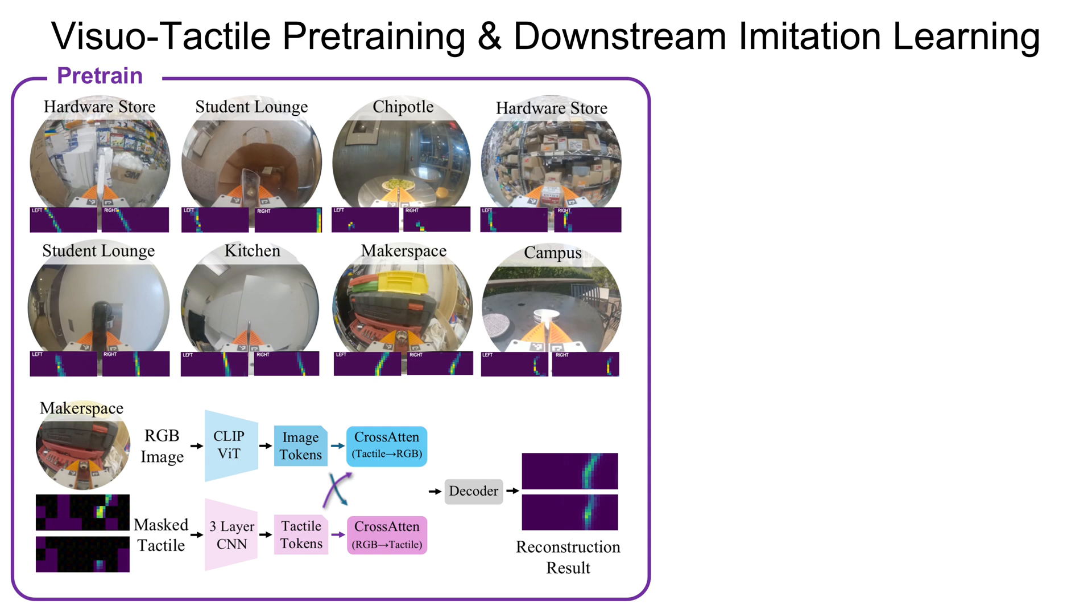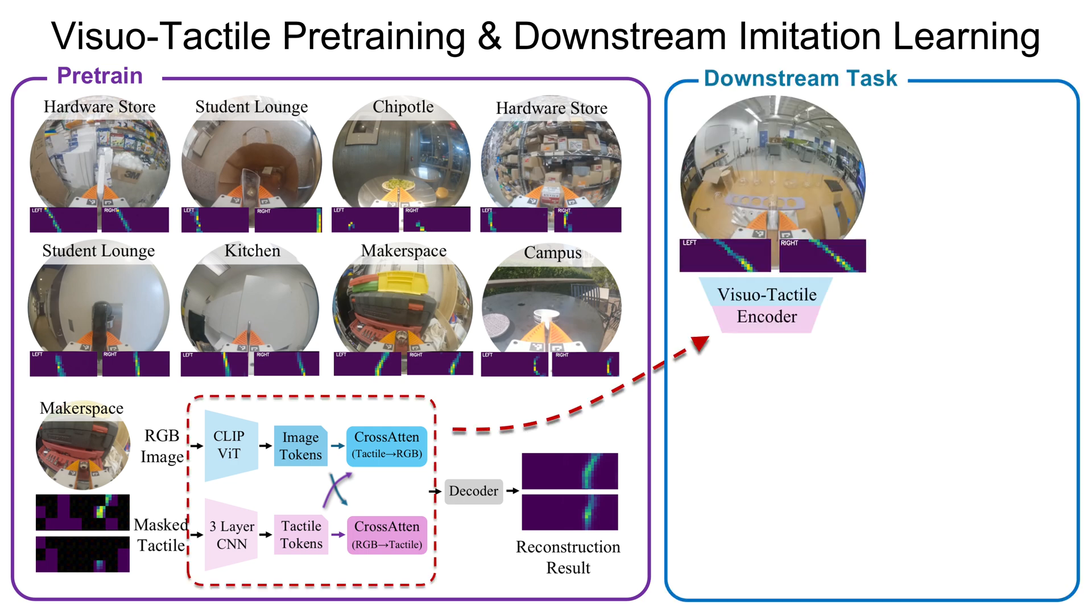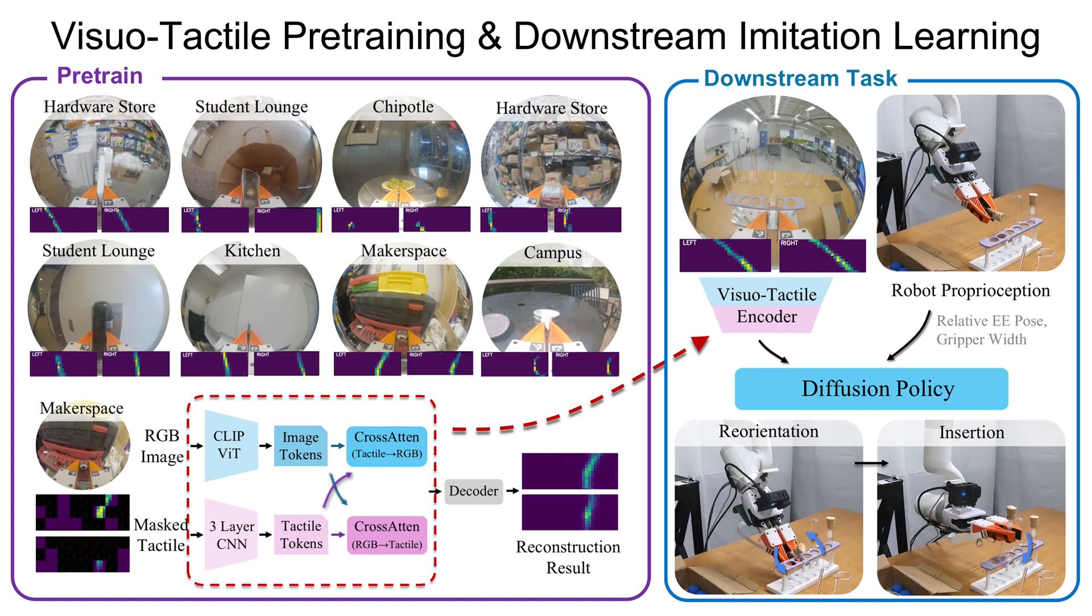In the second stage, we initialize a diffusion policy with this pre-trained encoder and train it by conditioning on its visual tactile embeddings alongside the robot's proprioceptive states, which enables the policy to generate precise manipulation actions.